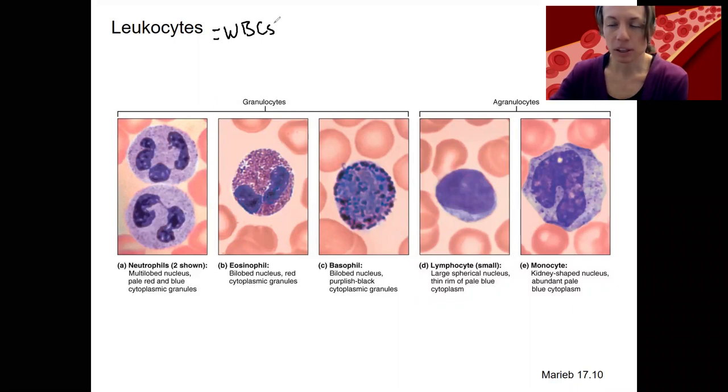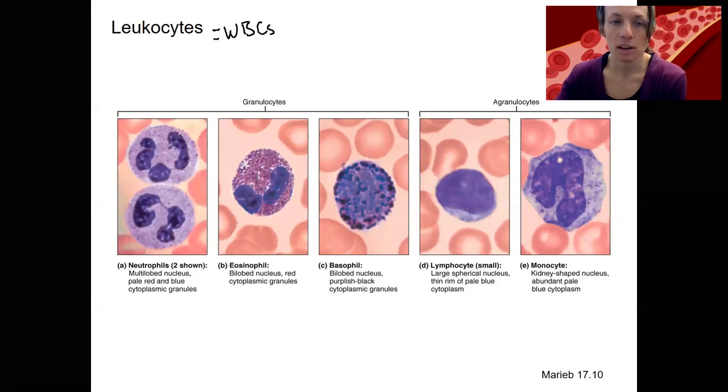You saw these in the blood sample in lab. They're bigger than red blood cells. They have a nucleus, often multi-lobed, so there's a lot more to them.